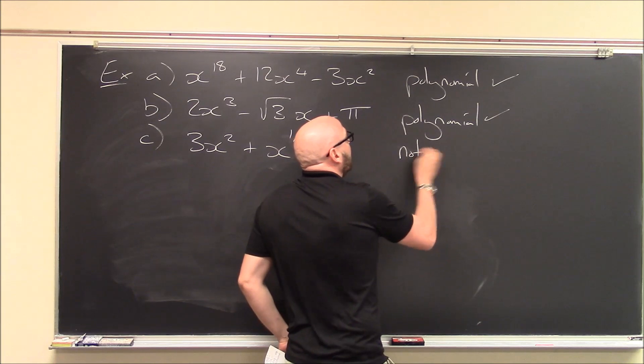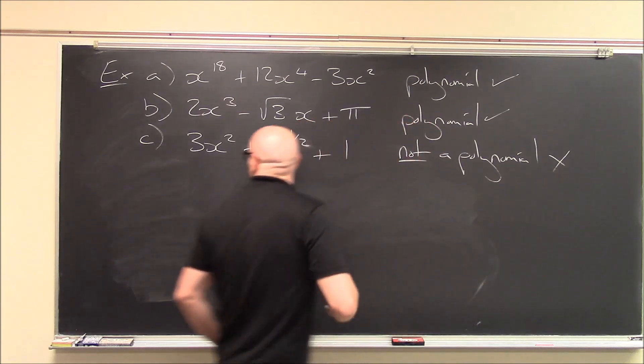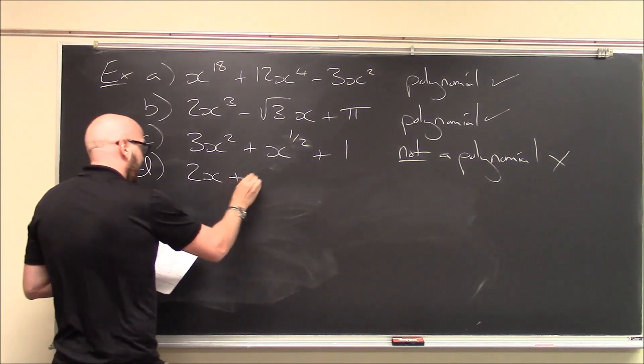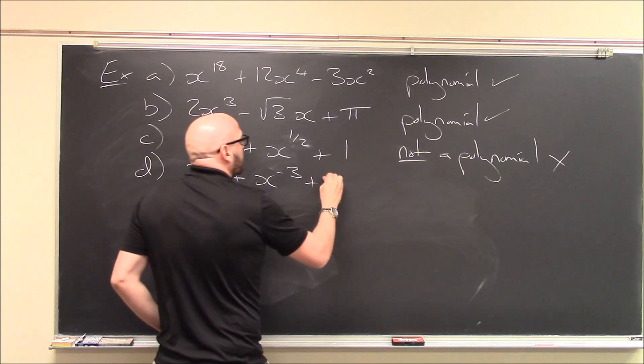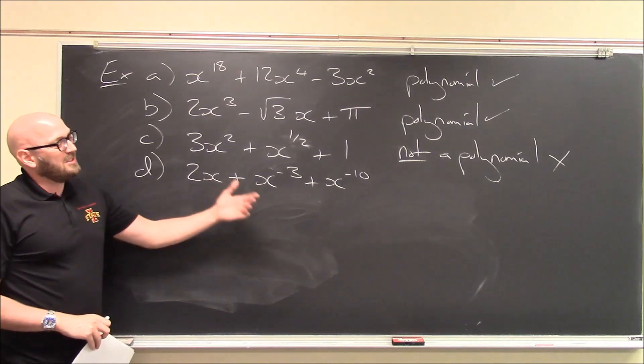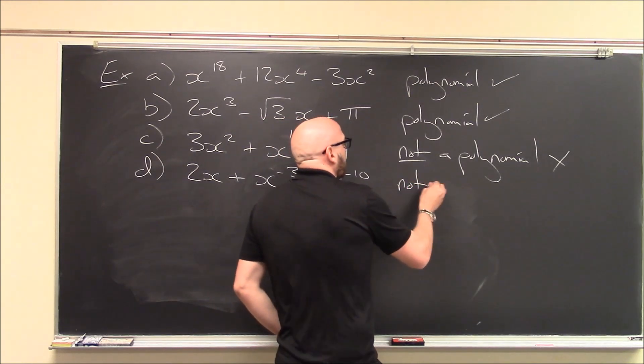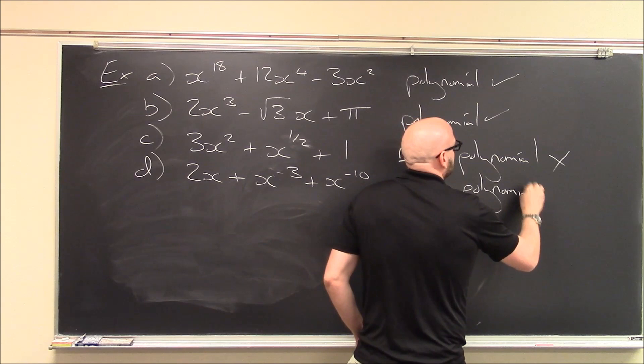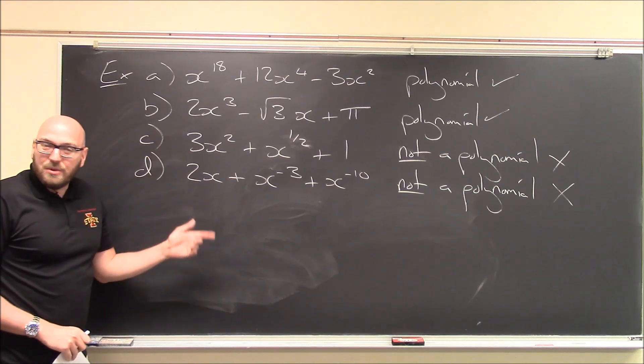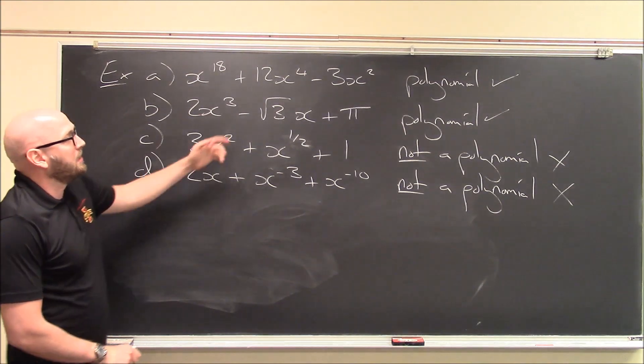Now it's not a polynomial because my exponent here on the x is not a whole number. So, unfortunately, this is not a polynomial. And last but not least, how about this guy? 2x plus x to the minus 3 plus x to the minus 10. Well, again, this is not a polynomial. It's a sum of a bunch of terms, but here my terms have negative exponents. So this one also fails to be a polynomial. In truth, c and d aren't that bad to work with. We'll work with expressions like this a lot throughout this course. But the really, really, really friendly types of functions are our actual polynomials themselves.